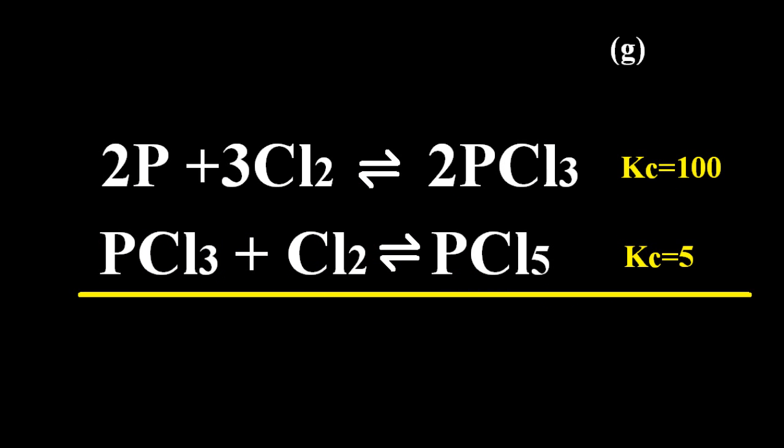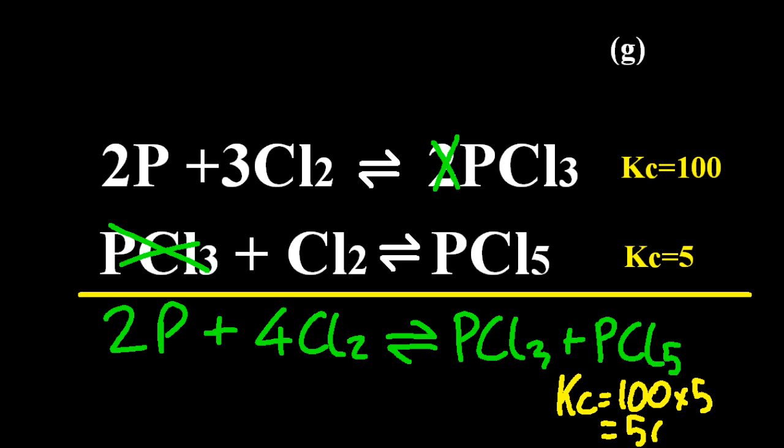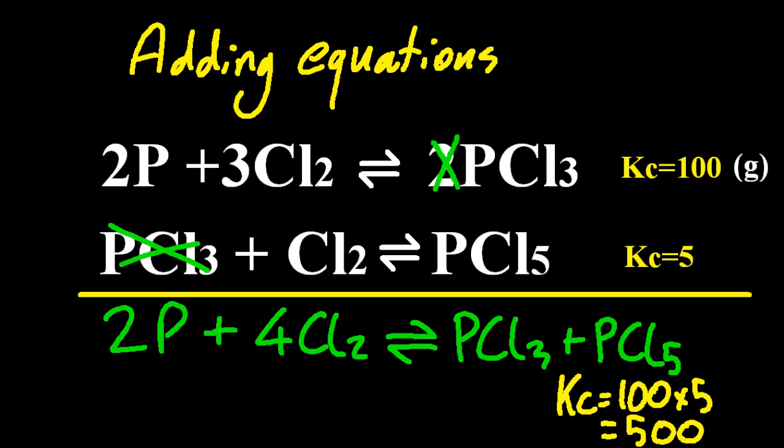Finally, what if you have a sequence of equilibria? What happens to Kc overall? Let me add up these two equations to get my final equilibrium equation. And what happens to Kc? You multiply them. So if you add equations, you're going to have to multiply the Kc's together. I'm assuming everything's a gas—that's what the G means.